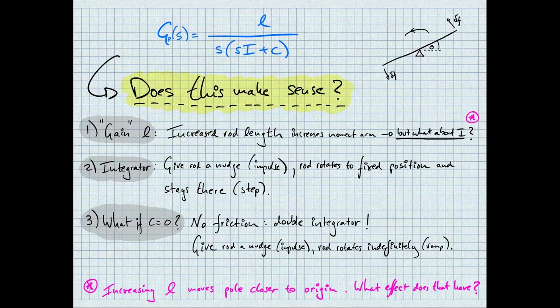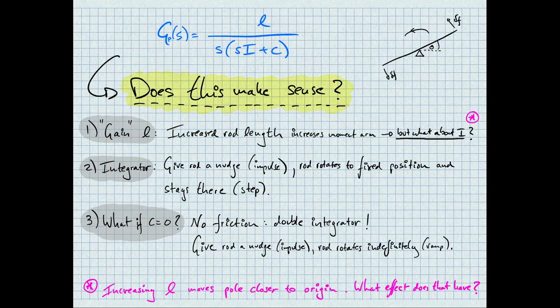Let's ask ourselves if this transfer function makes sense. I always find it useful to think if the transfer function intuitively represents the dynamics of the system. First of all, we have again L, which is the rod length. If we increase the rod length, the effectiveness or the moment arm of the motors is increased. However, recall that the moment of inertia actually increases with L squared, and that's in the denominator over here. Additionally, increasing L moves one of the poles closer to the origin.